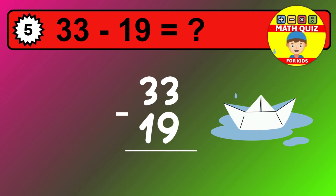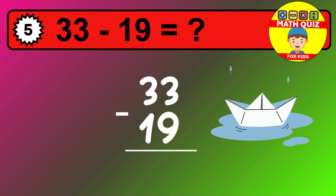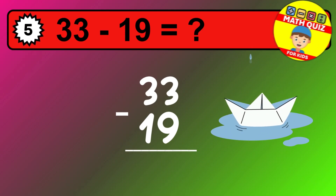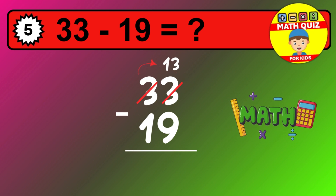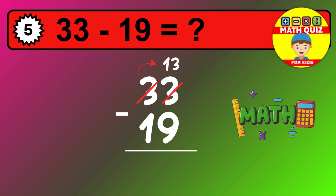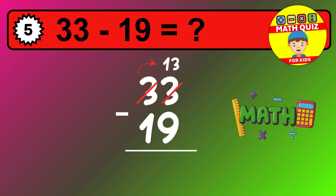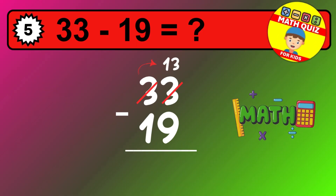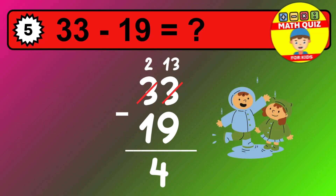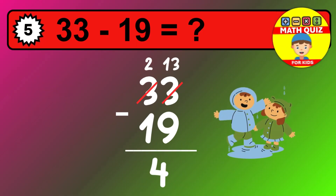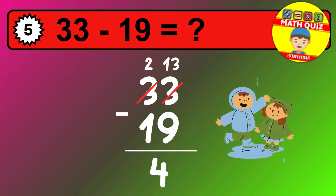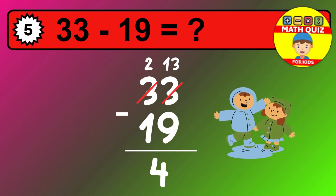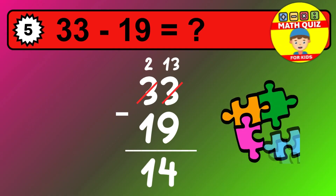Let's solve this step by step. We start with the units. 3 minus 9 is not possible, so we need to regroup. We take one 10 from the tens column. Now we have two tens, and the units become 13. Now we subtract. 13 minus 9 is 4. Then we go to the tens. 2 minus 1 is 1. The final answer is 14.